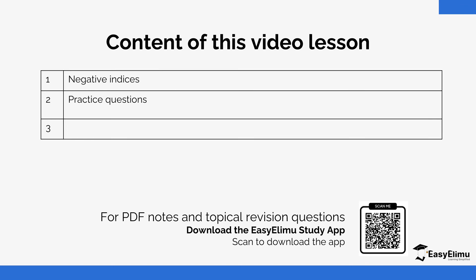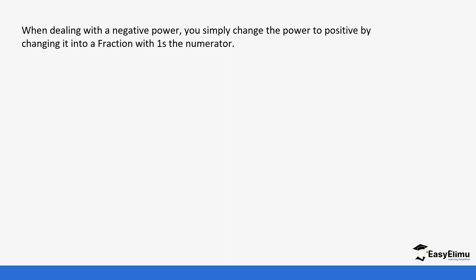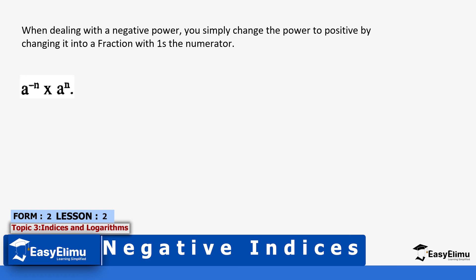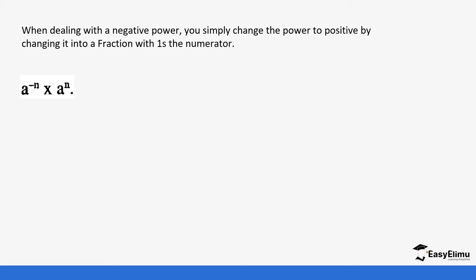In the previous lesson we looked at positive indices. In this case we're going to look at the values when you work them out and you get negative indices. When you're dealing with a negative power, you simply change the power to positive by changing it into a fraction with the numerator as one. For example, if you had a base with a negative value, this calculation means you had the indices as negative n plus n, which gives us zero. We know that a base raised to zero is the same as one.